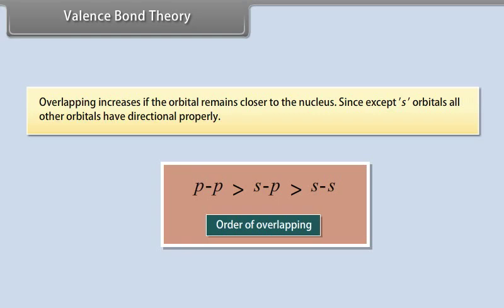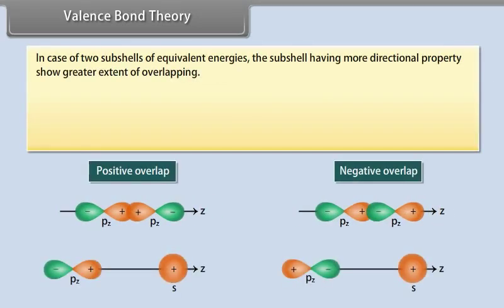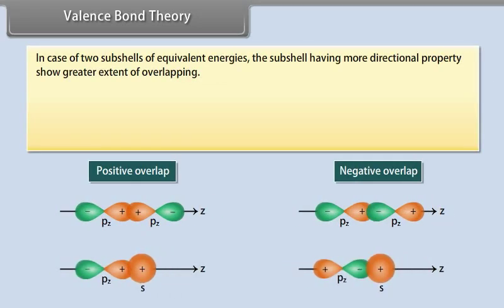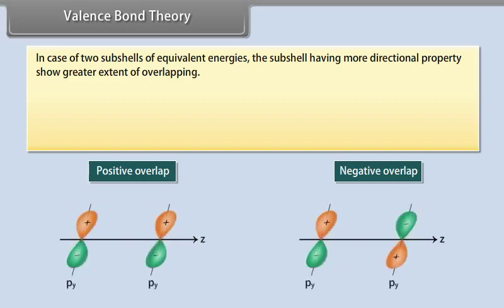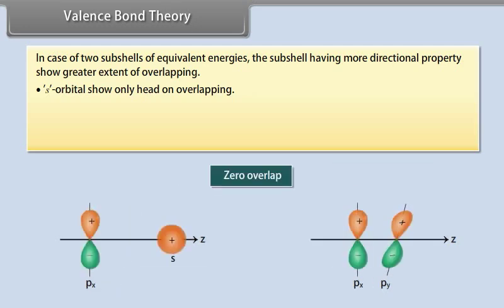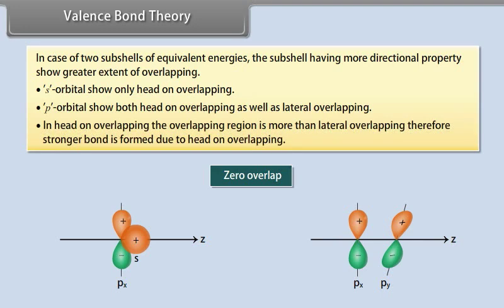Since except S orbitals, all other orbitals have directional property. In case of two subshells of equivalent energies, the subshell having more directional property shows greater extent of overlapping. S orbitals show only head-on overlapping, while P orbitals show both head-on and lateral overlapping. In head-on overlapping, the overlapping region is more than in lateral overlapping; therefore, a stronger bond is formed due to head-on overlapping.